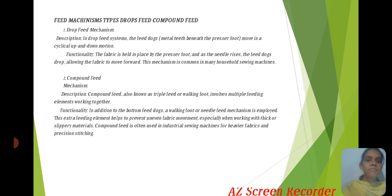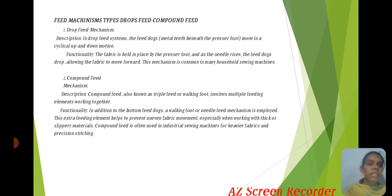Compound Feed, also known as Walking Foot feed, involves multiple feeding elements working together. In addition to the bottom feed dog, a walking foot and needle feed mechanism are employed. The extra feeding elements help to prevent uneven fabric movement, especially when working with thick and slippery materials. Compound feed is often used in industrial sewing machines for fabric pressing and stitching.